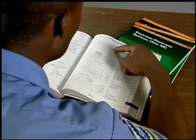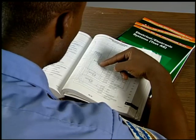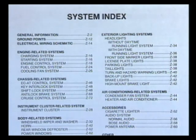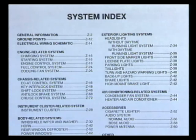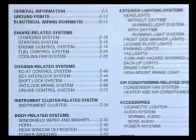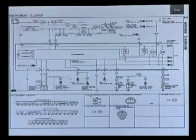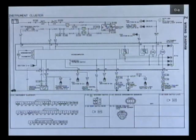Let's take a look at how we can use the information in the wiring diagram to troubleshoot a problem with a vehicle that has an inoperative engine coolant temperature gauge. The first step is to use the index of the repair manual to find the correct wiring diagram for the coolant temperature gauge circuit. Since the gauge is part of the instrument cluster or combination meter, let's go to that page. This diagram shows the whole instrument cluster. Since the other gauges and indicators are working normally, we can eliminate everything else and focus on the temperature gauge circuit only.